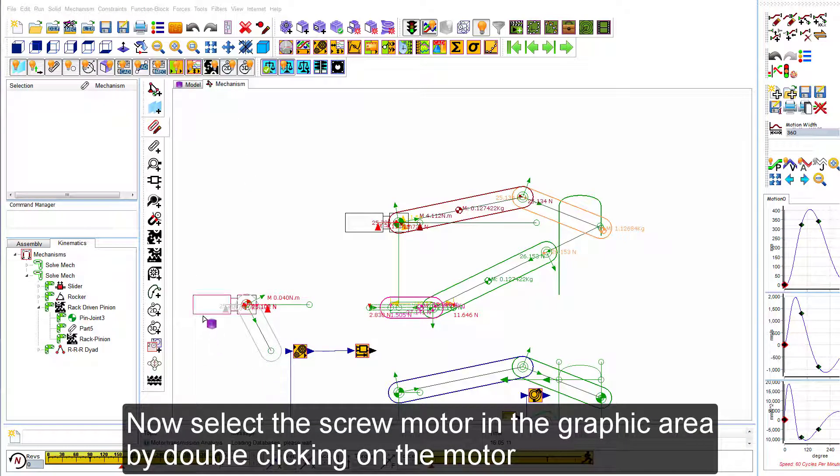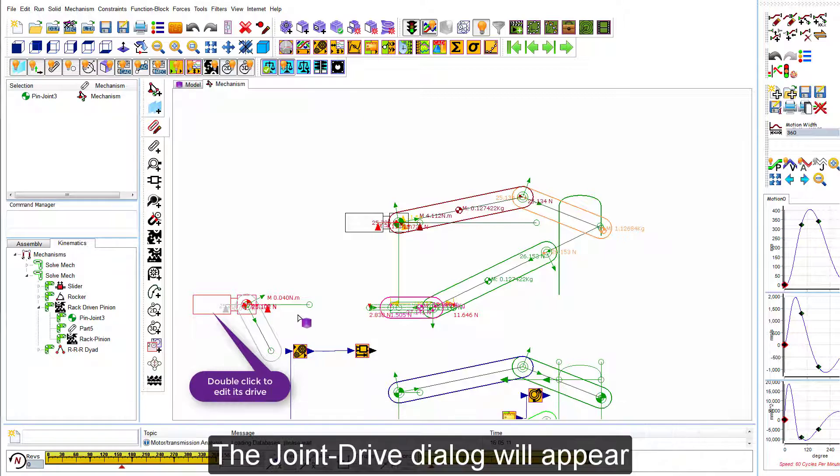Now select the screw motor in the graphic area by double clicking on the motor. The joint drive dialog will appear.